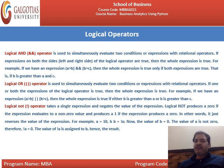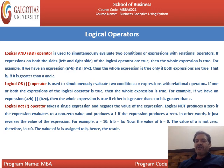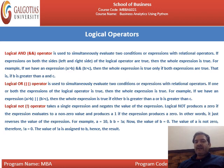The logical OR operator is used to simultaneously evaluate two conditions or expressions with relational operators. Listen carefully — in the logical AND operator, both conditions must be true. But in the logical OR operator, either condition being true is sufficient. If one or both expressions of the logical OR are true, the whole expression is true. For example, if we have A > B OR B > C, the whole expression is true if either A > B or B > C holds.